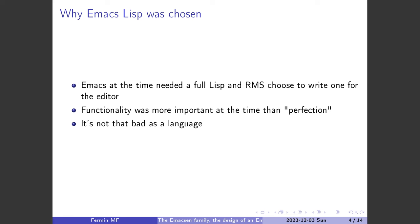Richard Stallman needed a Lisp, and there wasn't one available at the time. Keep in mind, this is the early 80s. Stallman was writing the core components of what would become GNU — the GCC and others. He needed an editor, he wanted Lisp, he wanted Emacs, so he wrote Emacs Lisp.